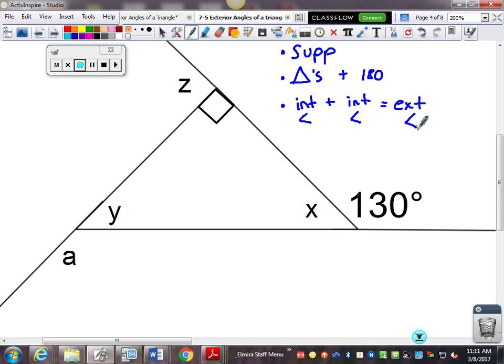We just learned that an interior angle plus an interior angle equals an exterior angle. So those kinds of relationships. Also, we did an example in class that involved vertical angles. It's not in the notes, but it's something we did in our activity today.